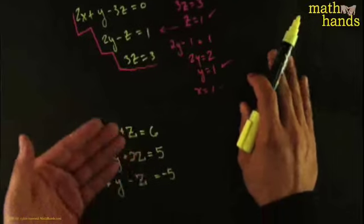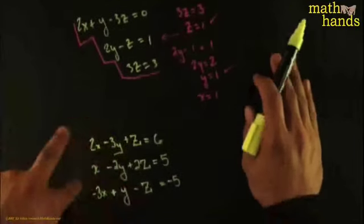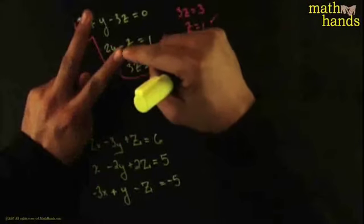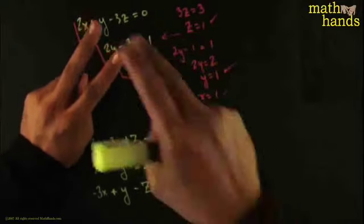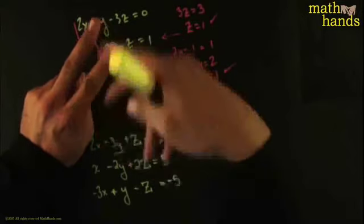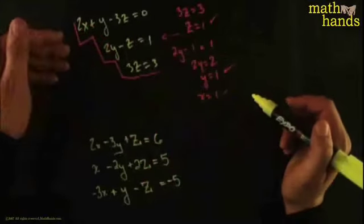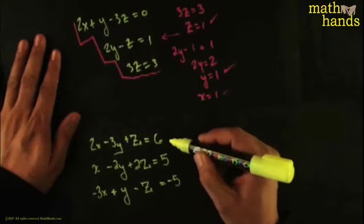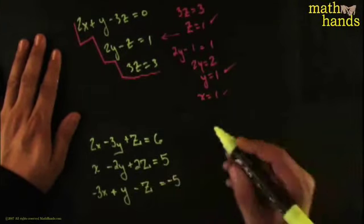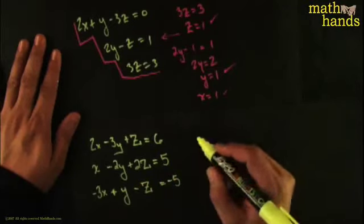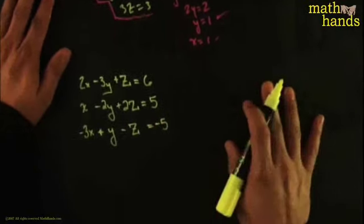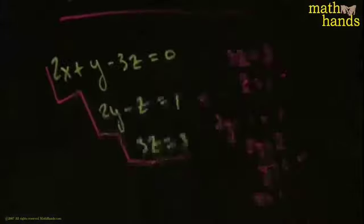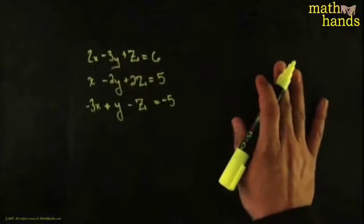We need to lay down the ground rules: what kinds of tweakings are allowed so we can turn a hard system into an easy one. We want to, first, define the allowed operations, and second, design a strategy we can always follow. Let's go ahead and solve this system while I explain the rules — I think working through it will shed a lot of light on the process.